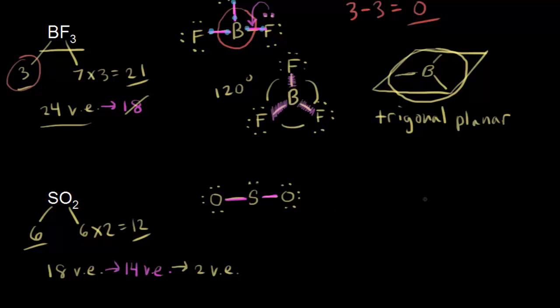We're not quite done with our dot structure because sulfur doesn't have an octet, and sulfur's formal charge is not minimized. We need to share some electrons — we can take a lone pair of electrons from one of the oxygens and move them in to form a double bond between the sulfur and the oxygen. Now we have a double bond between the sulfur and the right oxygen. The right oxygen now has only two lone pairs, the left oxygen still has three lone pairs, and the sulfur still has a lone pair of electrons.